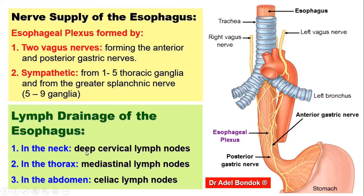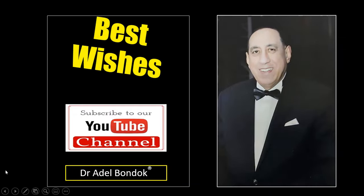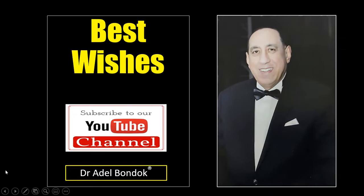Regarding lymphatic drainage: in the neck, drainage is to the deep cervical lymph nodes; in the thorax, to the mediastinal lymph nodes; and in the abdomen, drainage follows the left gastric artery to the celiac lymph nodes. Thank you very much, best wishes and good luck, and see you later.